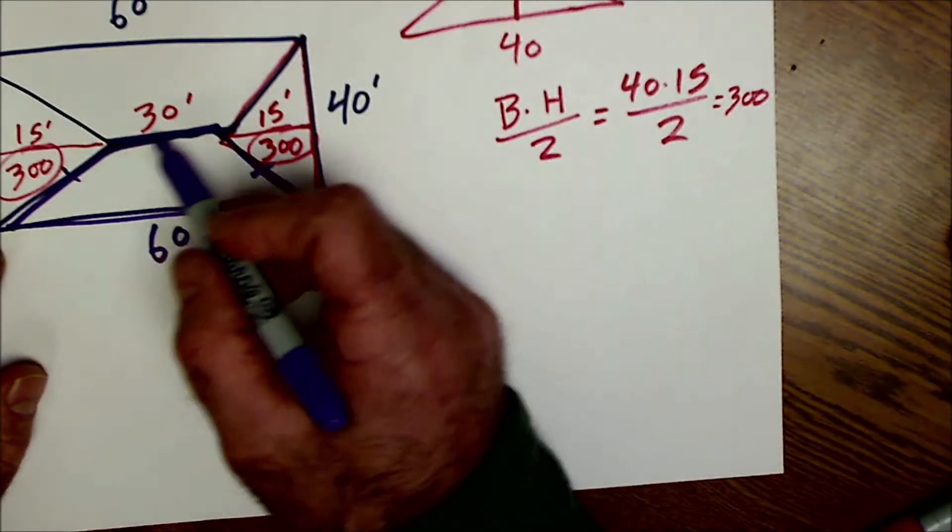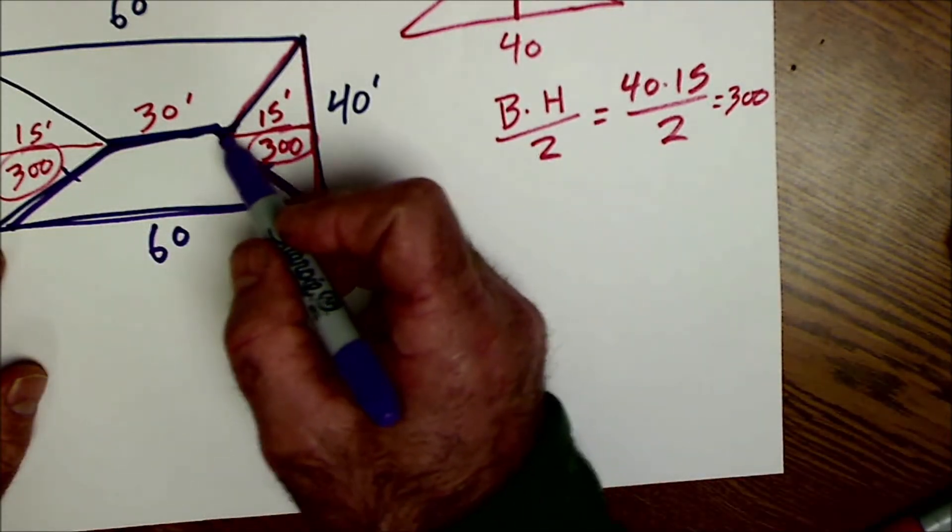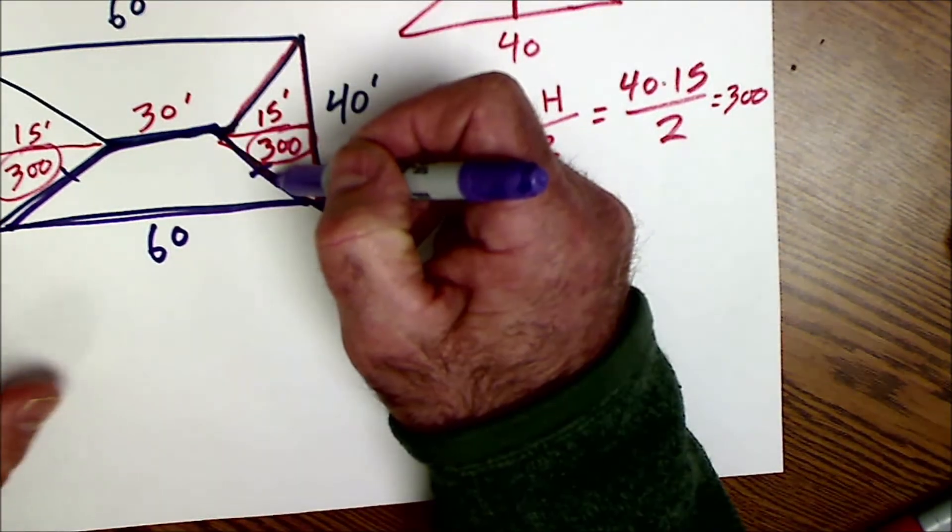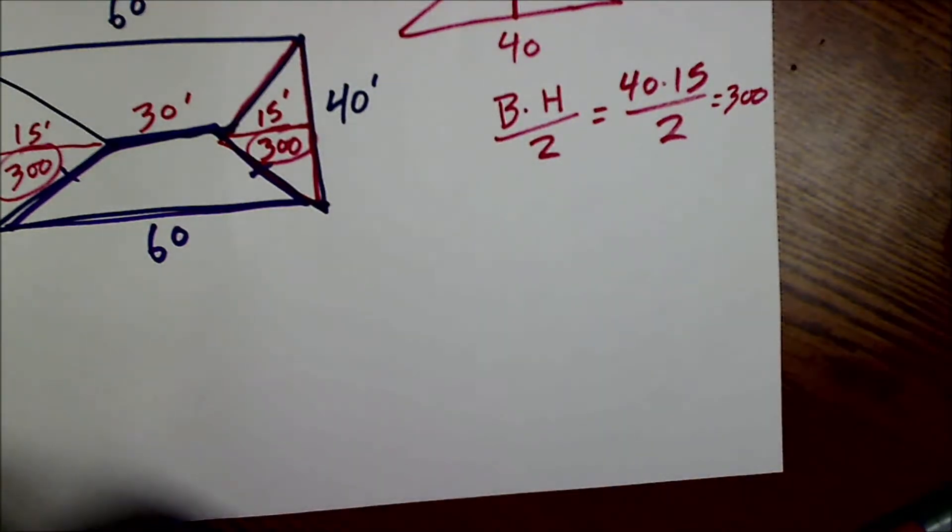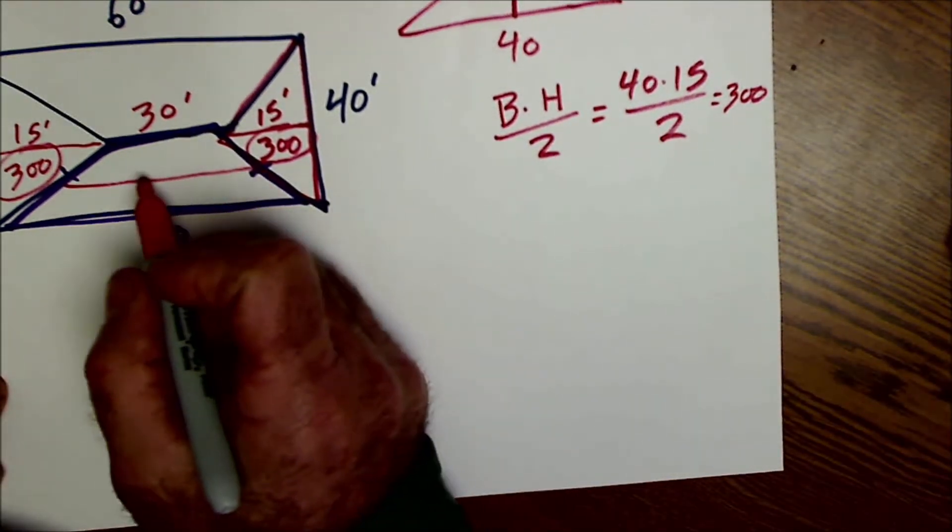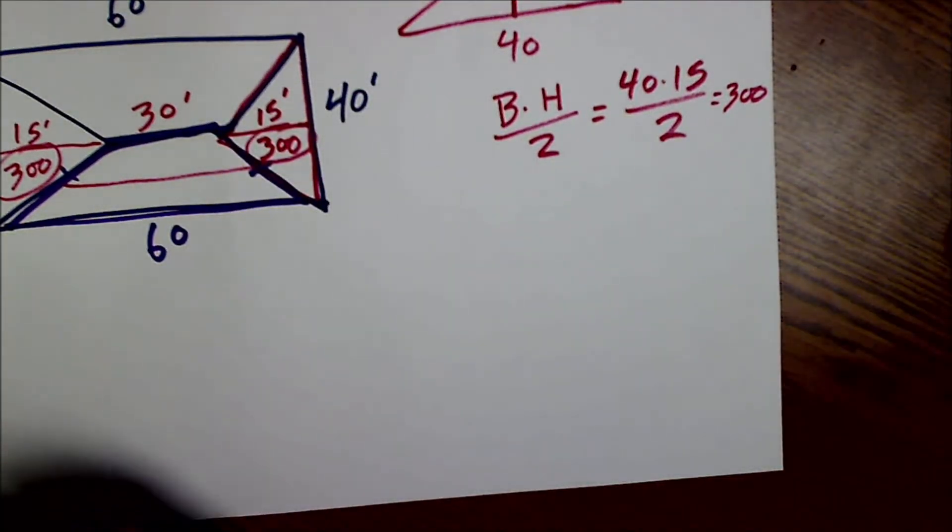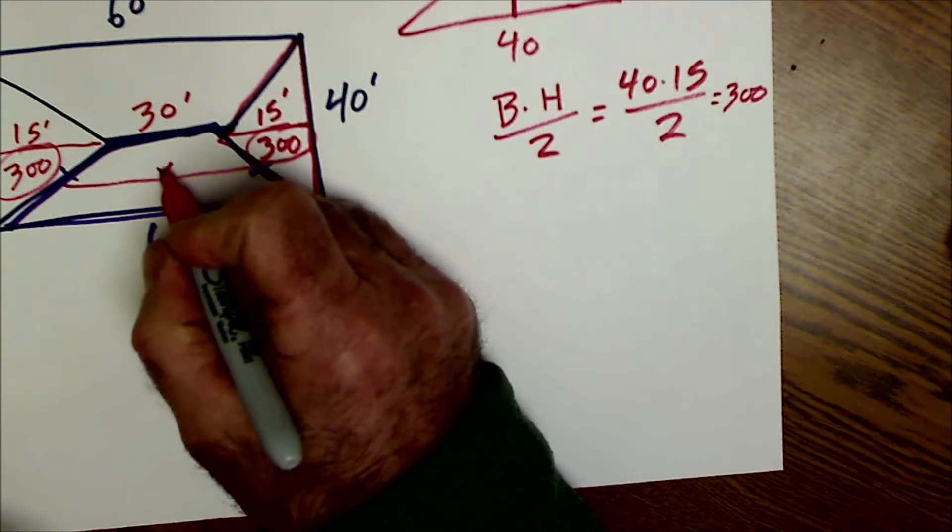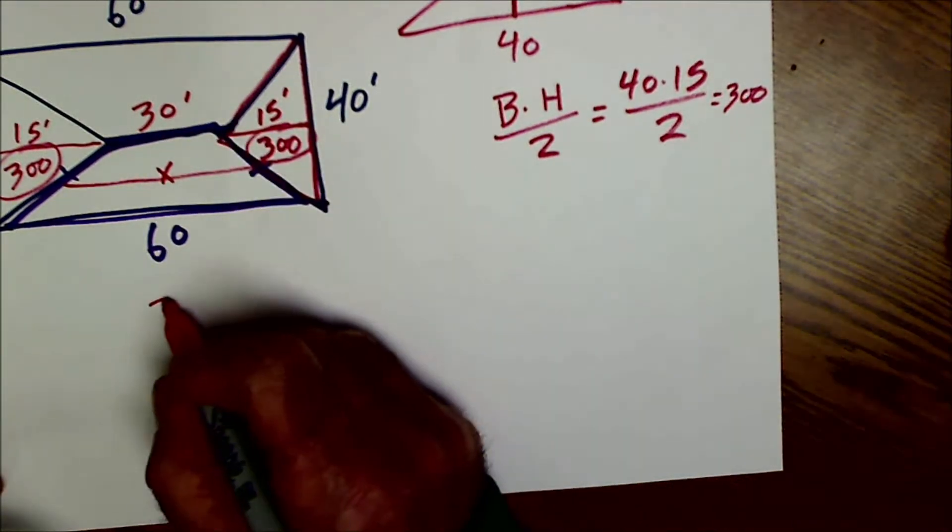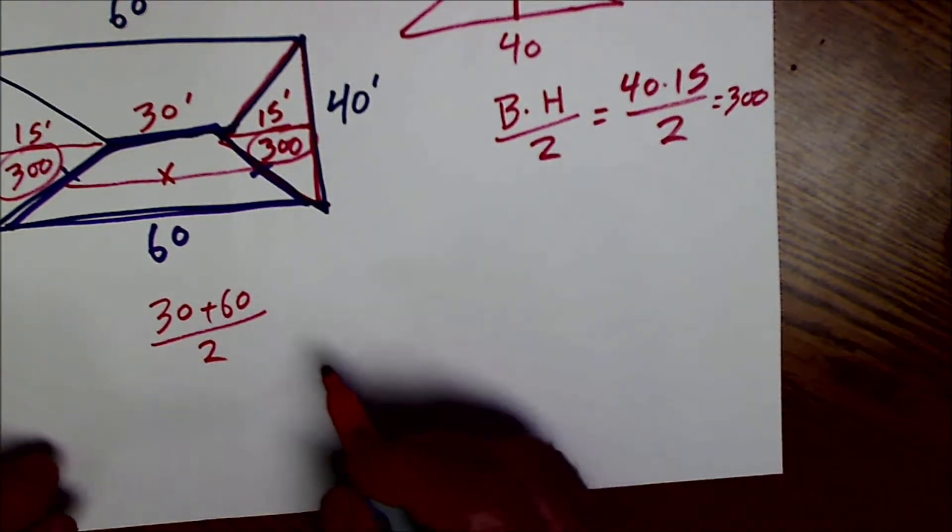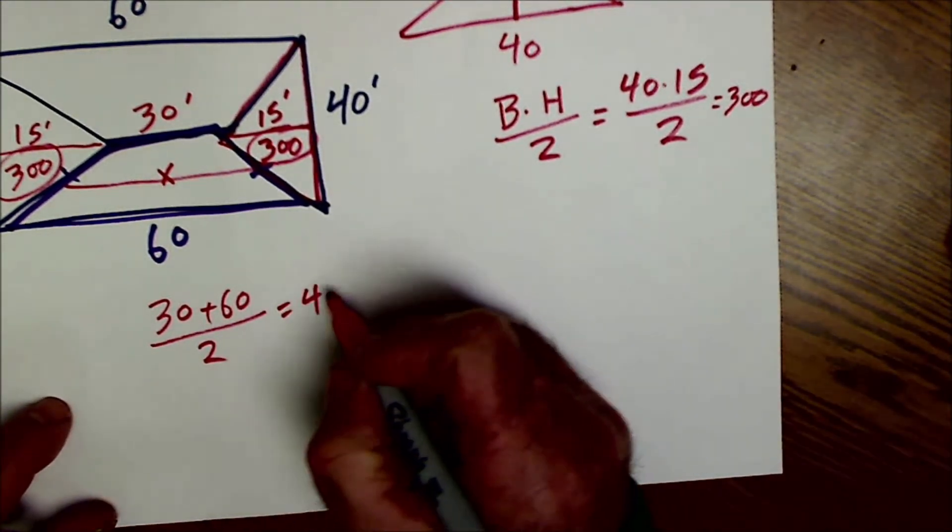Next, let's go ahead and find the area of this trapezoid right here. A trapezoid has one pair of parallel sides, and the other sides are not parallel. So what I want to find here is actually what's called the median, and it is the average. This value right here is the average of the two bases. So the way I find this red line here, we'll just call it x, is I'm going to add the one base, 30, plus the other base, 60, and divide by 2. 90 divided by 2 is 45.